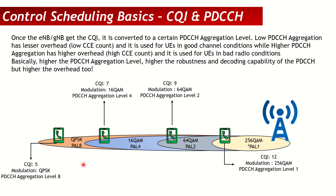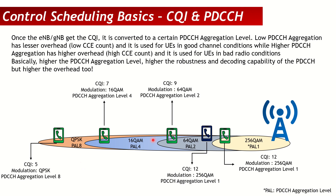This is pretty much similar for both data and control, but here comes the difference. If a UE is in an area mapped to 64 QAM and aggregation level 2 but sends CQI 12, the gNodeB will simply allocate 256 QAM and the most aggressive PDCCH aggregation level 1 — which this UE might not be able to decode. That is why we need another algorithm to find the most optimum PDCCH aggregation level, and this is where the difference between data and control scheduling starts.